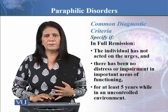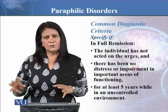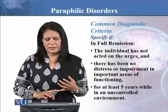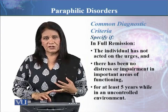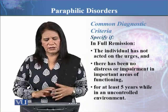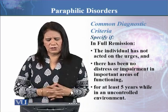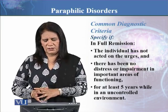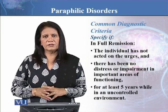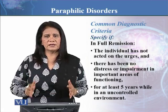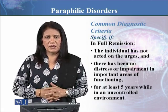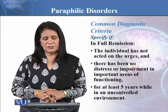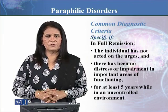Also specify in all these disorders whether the condition is in full remission. Full remission means the person had one of these disorders but for the last five years has not acted on the urges, and there has been no distress or impairment in important areas of functioning — which is the C criteria, a very important criteria for any disorder to be diagnosed. This applies to pedophilic disorder as well, and refers to the last five years while in an uncontrolled environment where opportunities existed but the individual was able to exercise control and not act on the urges. This is the common diagnostic criteria where you need to specify both of these specifiers while diagnosing anyone with any kind of paraphilic disorder.